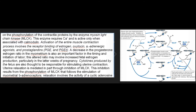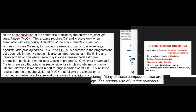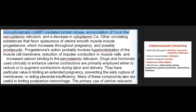Uterine relaxation is mediated in part through inhibition of MLCK, resulting from phosphorylation of MLCK following stimulation of myometrial beta-adrenoceptors. Relaxation involves the activity of a cyclic adenosine monophosphate (cAMP)-mediated protein kinase, accumulation of calcium in the sarcoplasmic reticulum, and a decrease in cytoplasmic calcium. Other circulating substances that favor quiescence of uterine smooth muscle include progesterone, which increases throughout pregnancy, and possibly prostacyclin. Progesterone's action probably involves hyperpolarization of the muscle cell membrane, reduction of impulse conduction, and increased calcium binding to the sarcoplasmic reticulum.